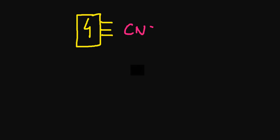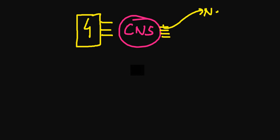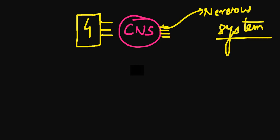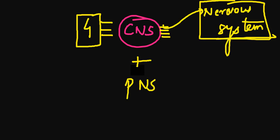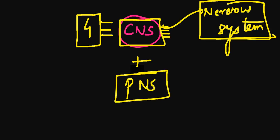This question comes from unit number four, biological basis of behavior, and it is asking about the central nervous system. Before answering, we will deep dive into the nervous system. The nervous system comprises your CNS — central nervous system — plus your PNS — peripheral nervous system.